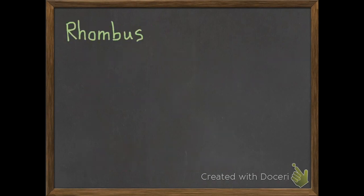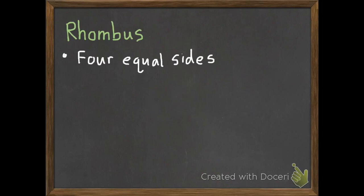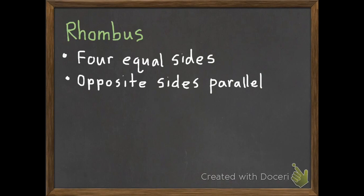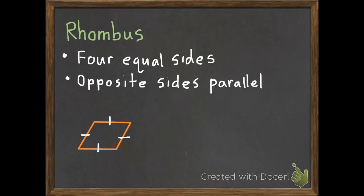Third, we have a rhombus. To be a rhombus, a quadrilateral needs to have four equal sides, and the opposite sides need to be parallel. Here's a rhombus — all four sides have to be equal. I draw little tally marks because I'm not perfect at drawing them, to show they're all the same length. All four sides are equal, and the opposite sides are parallel — those are parallel lines, and these are parallel lines. That is a rhombus.